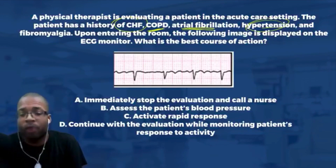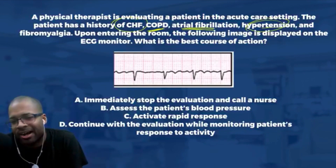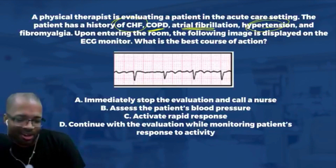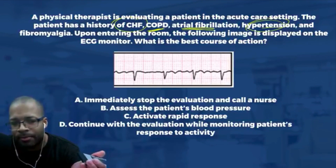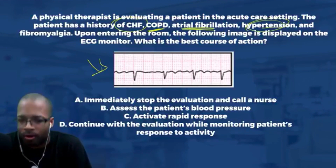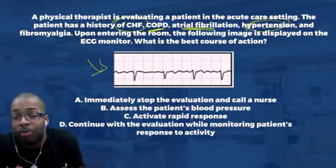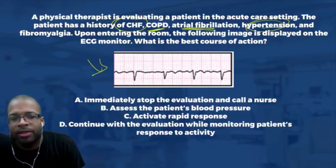Before dissecting the answer choices, you have to look at the ECG reading. What do I see here? What I do is always start on the left side of the ECG reading. I know my waves: there's a P wave, the QRS, and the T wave — we have to know what they all stand for. Starting on the left side, the first thing I'm looking for is my P wave, which marks the beginning of cardiac contraction. I look here and I do see a P wave.